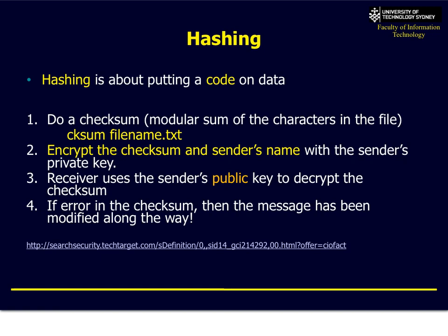You do something like a checksum — you add up the characters (A could be 1, B could be 2, and so on), simply add them all up, and you get a magic number at the end. Then you encrypt that number with your own private key. The receiver uses your public key to decrypt it and runs the same algorithm — adding the letters up to get their own number.